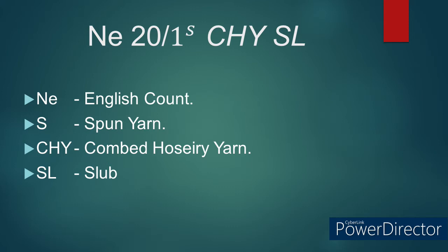Normally, the slub yarn is made using the following four parameters: slub diameter, slub length, distance between two slubs, and slub per meter.